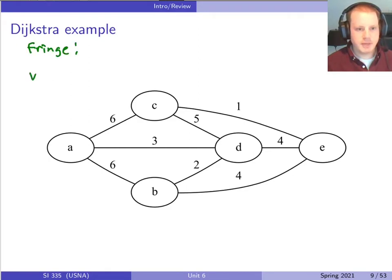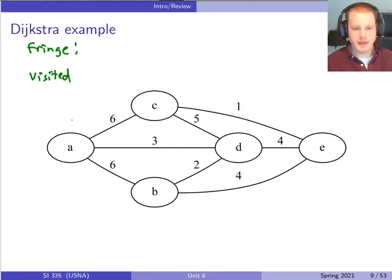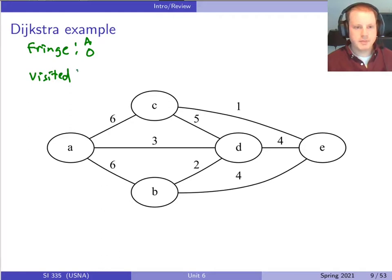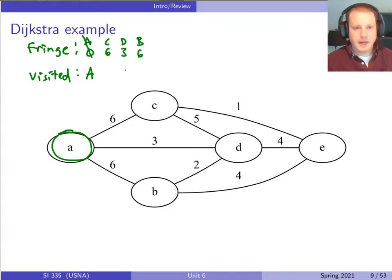So we have a fringe and we have a visited list. Let's say we're trying to get the shortest path from A to E. We start by putting A in the fringe — our starting node — and everything in the fringe has a distance of how far it took to get there. So A is our starting point, so we say it has a distance of zero. Then repeatedly, we take the closest thing off the fringe, mark A as visited, follow the edges going away from A, and add those into the fringe.